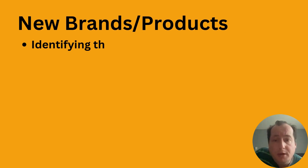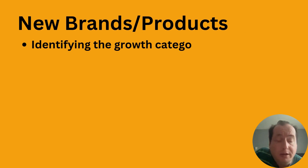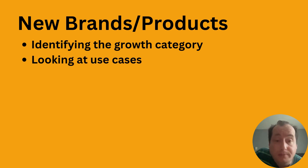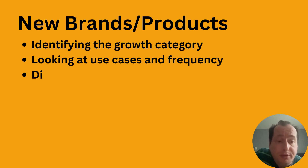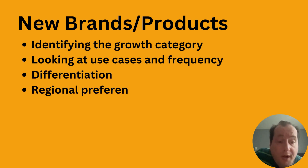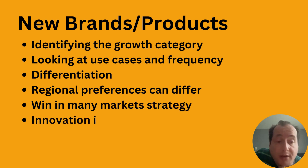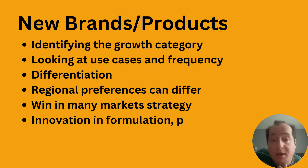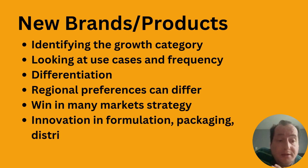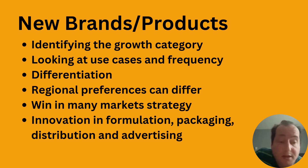For new brands and new products, you need to identify the growth category — basically which category has potential to grow. This is based on use cases, so you map the market and look at where categories are growing. This is data you can get from both desk research and also from the retailers that you deal with, comparing competitors.